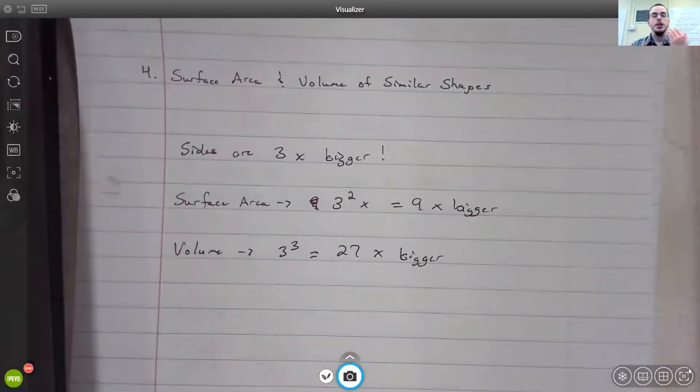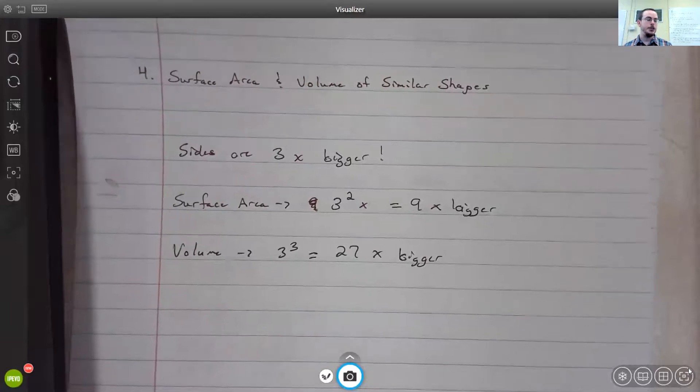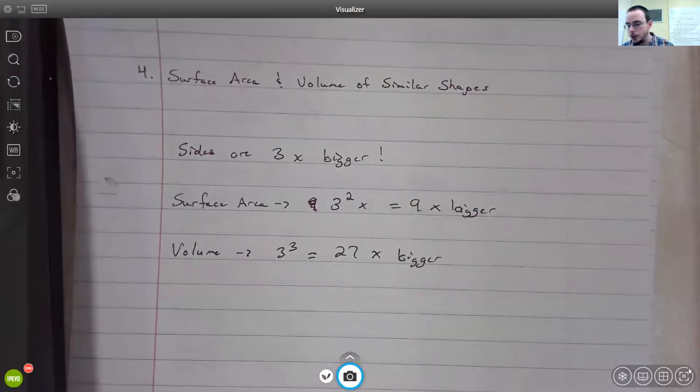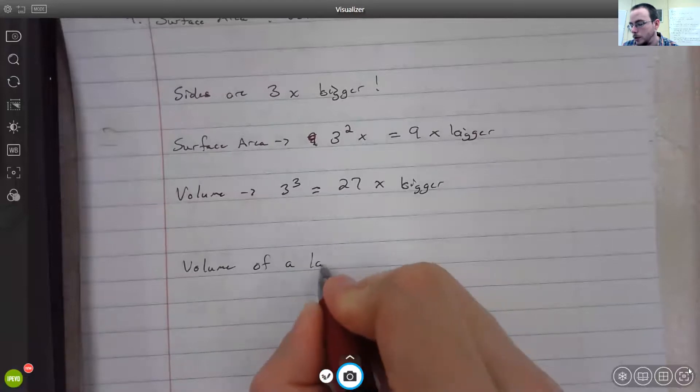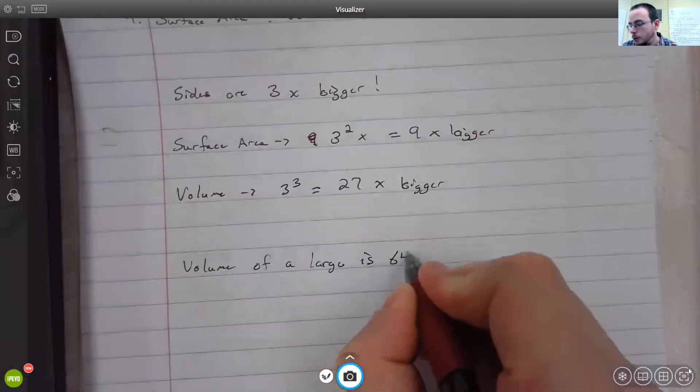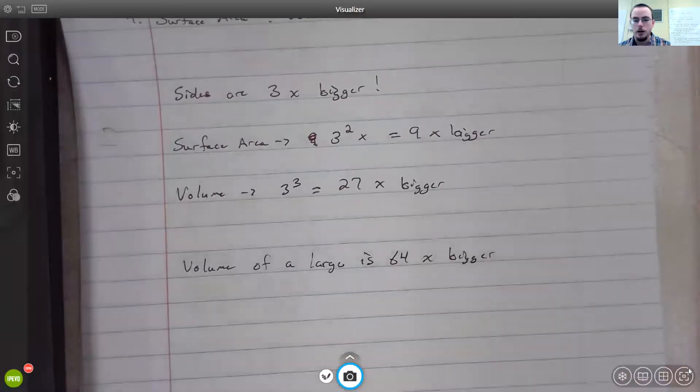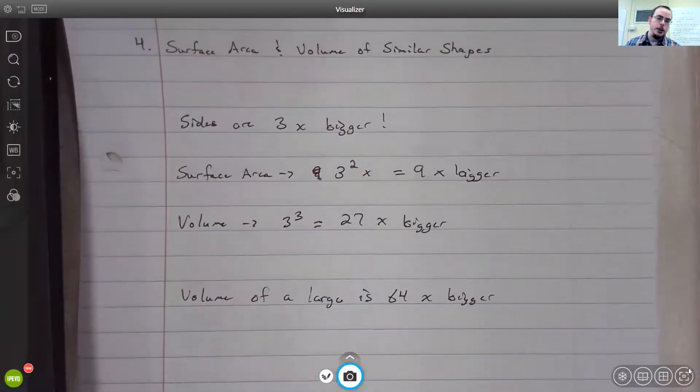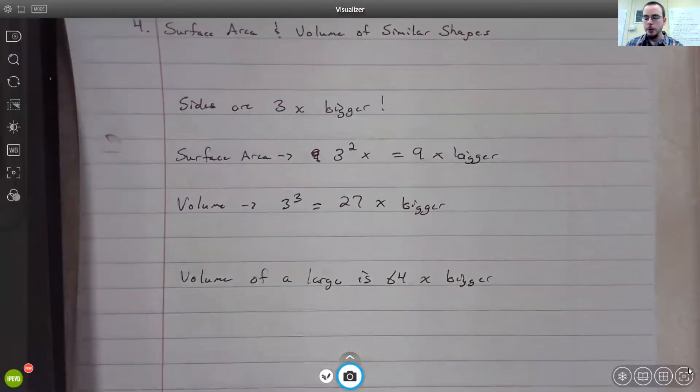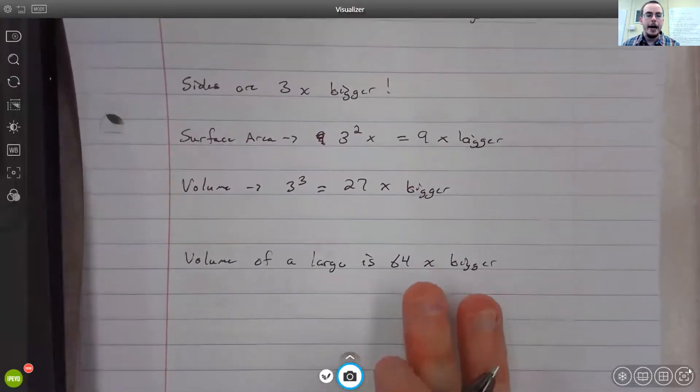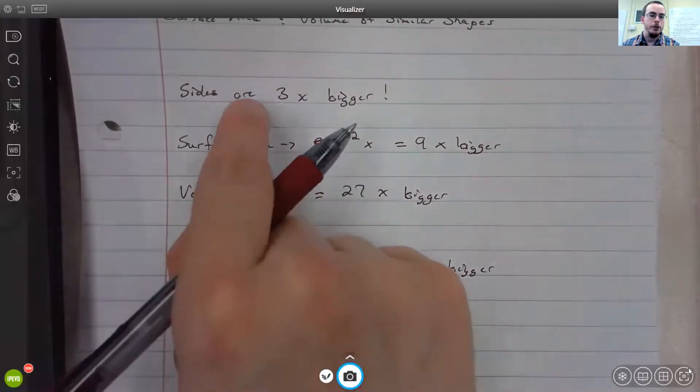But in some instances, you'll have something that says the volume of this shape is 64 times larger than the volume of the smaller one. So if you had the volume of a large is 64 times bigger than the other one, and it wanted you to find one of the sides or whatever else, for instance, maybe it wanted you to find the height of something or the radius of something.